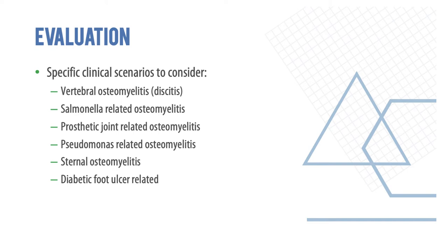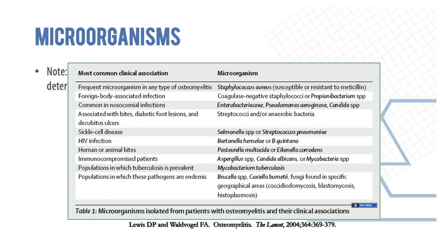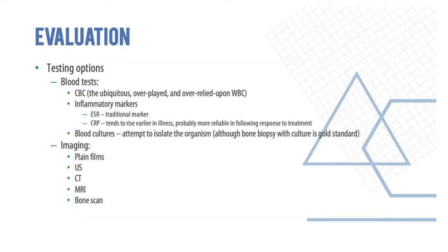Diabetic foot-related infections occur when patients have a history of diabetes. Microorganisms are multiple; Staph aureus is the most common, but depending on the setting it can be polymicrobial. Any infection workup starts with blood tests — complete blood count, ESR, and CRP are very important. ESR is a traditional marker more indicative of long-term infection or inflammation, whereas CRP gives day-to-day trends and response to treatment.